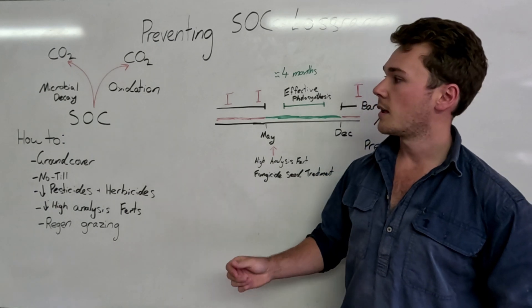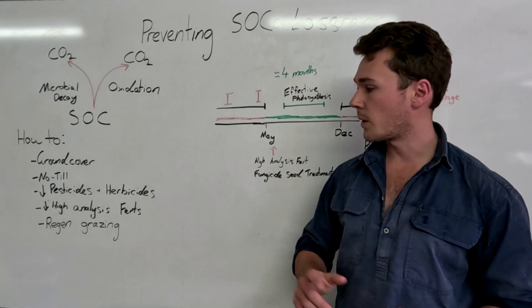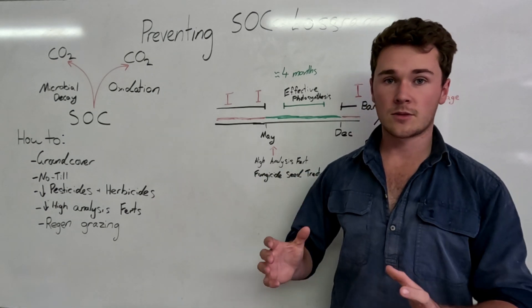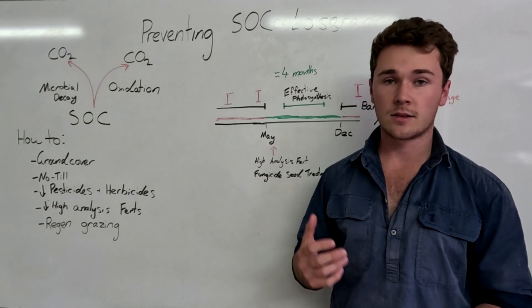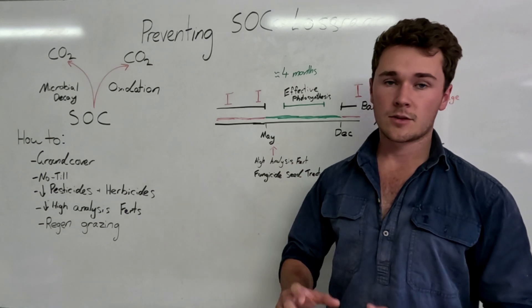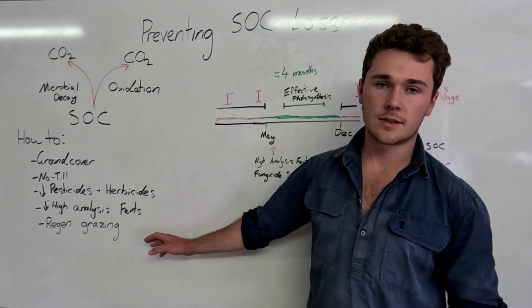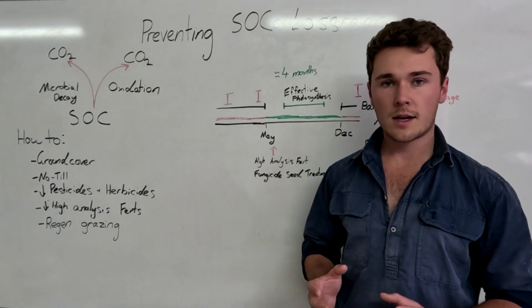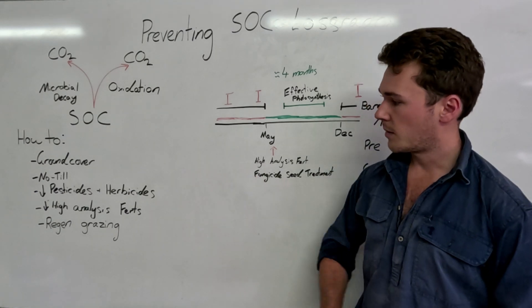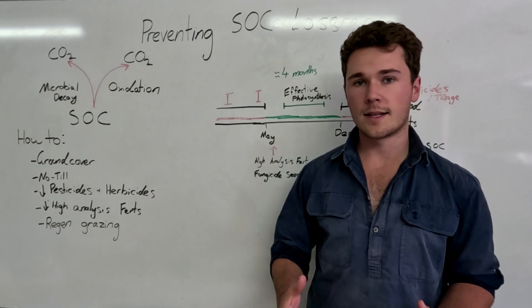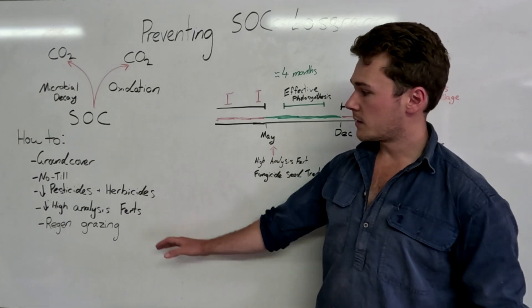High analysis fertilizers, especially nitrogen, can further oxidize soil organic carbon, which obviously we don't want. So we want to reduce high analysis fertilizers and there's ways we can do that. We'll talk about that in a future video, but some of that involves fulvic acid or humic substances to buffer the high analysis fertilizers. And then finally, if we're in a grazing situation, we want to graze in a regenerative manner, or holistic or AMP grazing, or however you'd like to describe it. But effectively that's just not overgrazing and giving enough rest time for our pastures to recover.